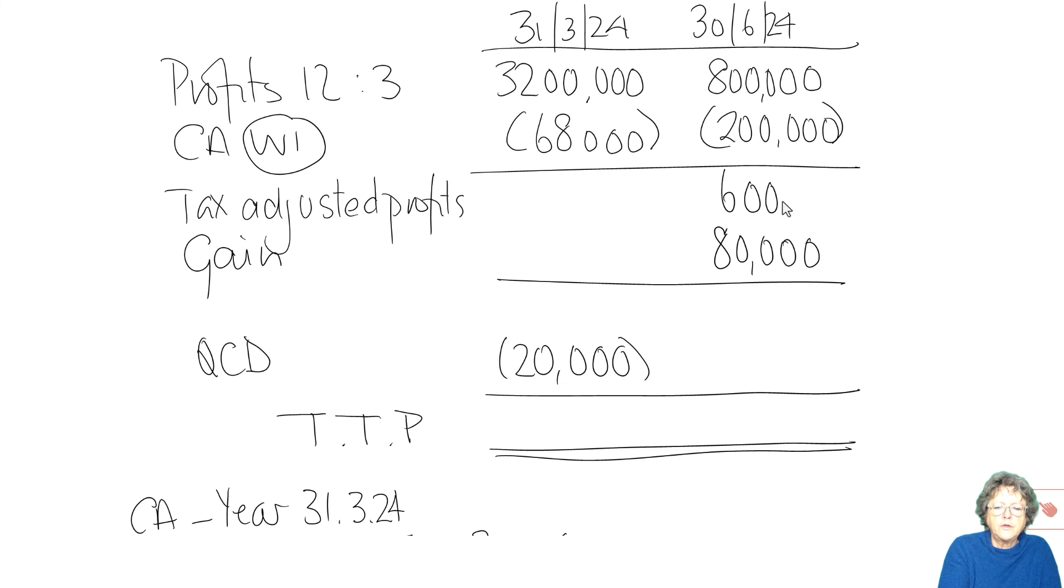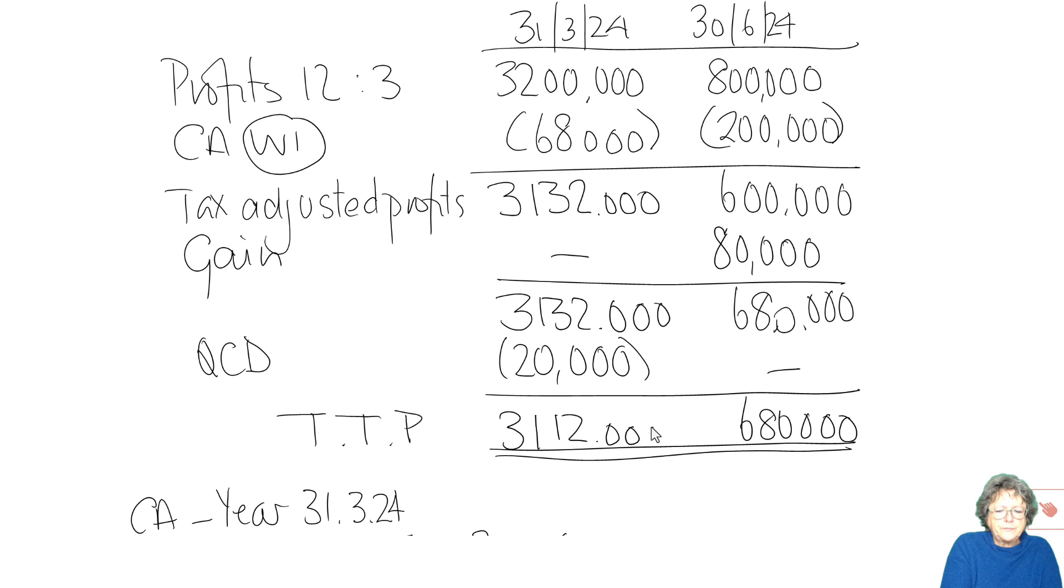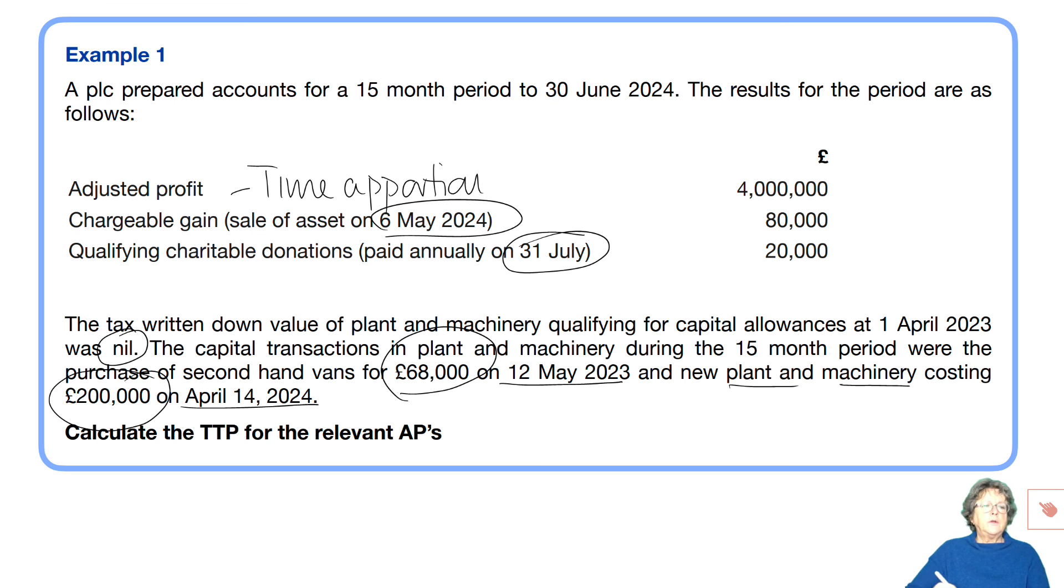That's going to be 3, 1, 3, 2. No gain. 3, 1, 3, 2. 3, 1, 1, 2. Too many zeros. So that's long periods of account.